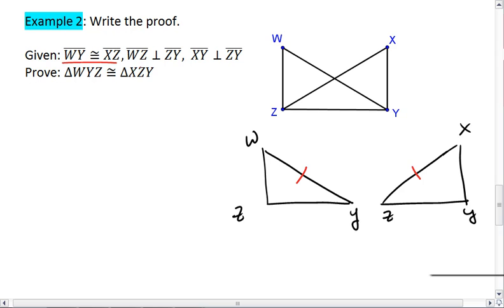Next, I know that WZ is perpendicular to ZY, which gives me a right angle here. In my separate triangle drawing, I can draw the right angle there. I also know that XY is perpendicular to ZY, which gives me a right angle there.